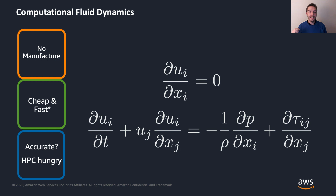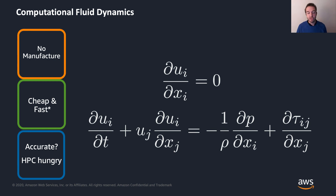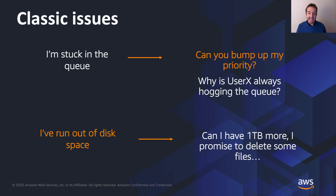Of course, the question is: is it accurate? I'm not going to go into that here, but I will say that the accuracy is absolutely linked to the HPC cost. Typically CFD is HPC hungry — it's a tightly coupled application. But if we want to use more and more HPC to get more accurate CFD and reduce wind tunnel usage, the problem we often get is that people are stuck in their HPC queues, whether in university or industry, or they've run out of disk space.